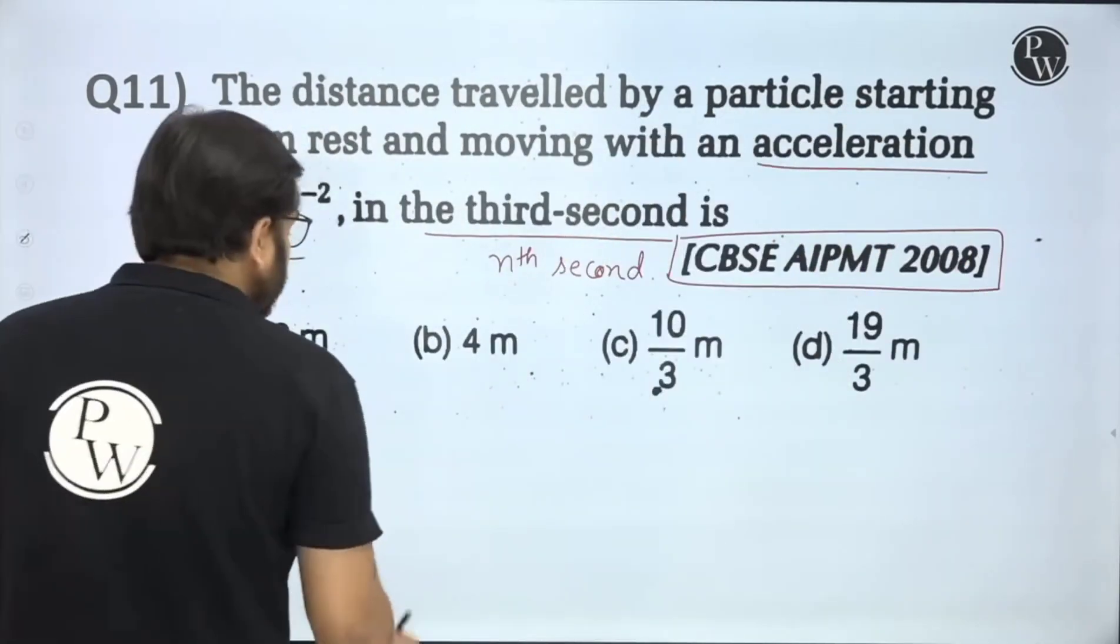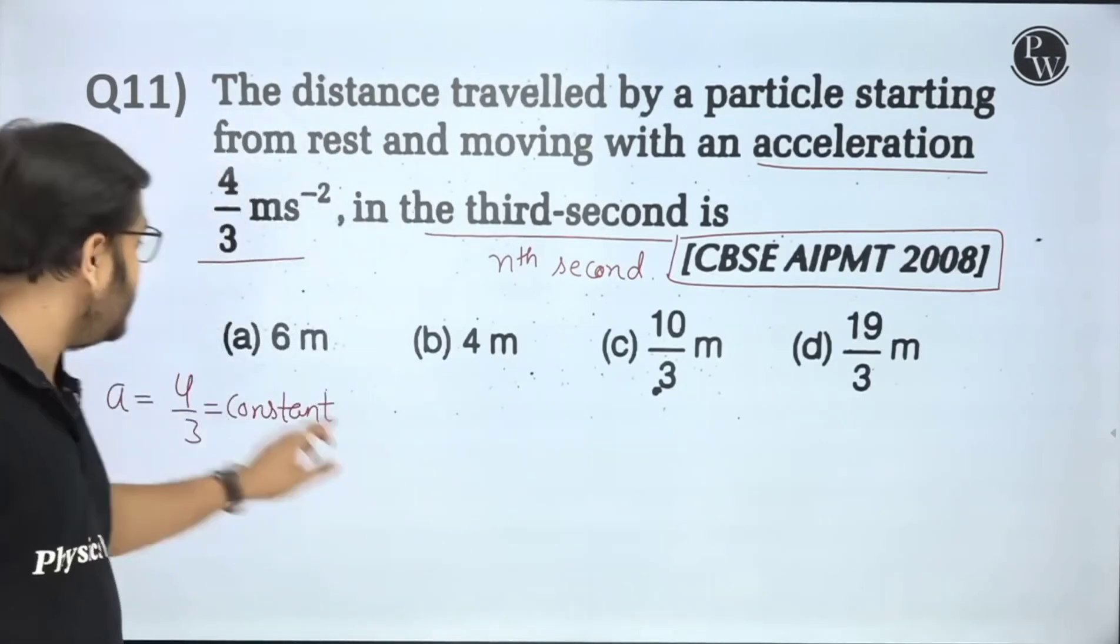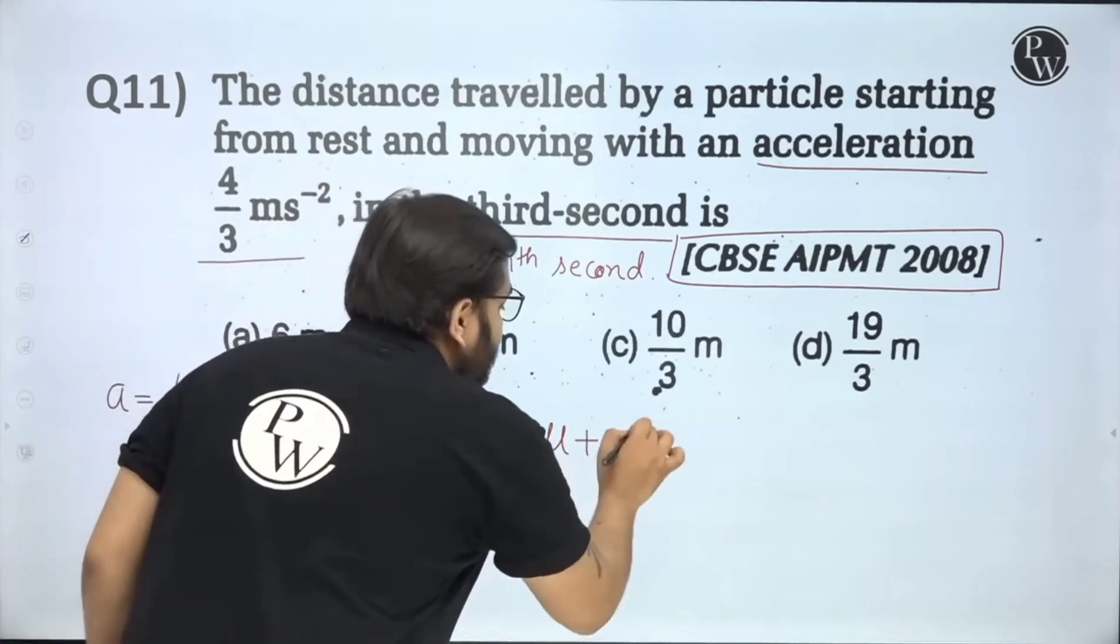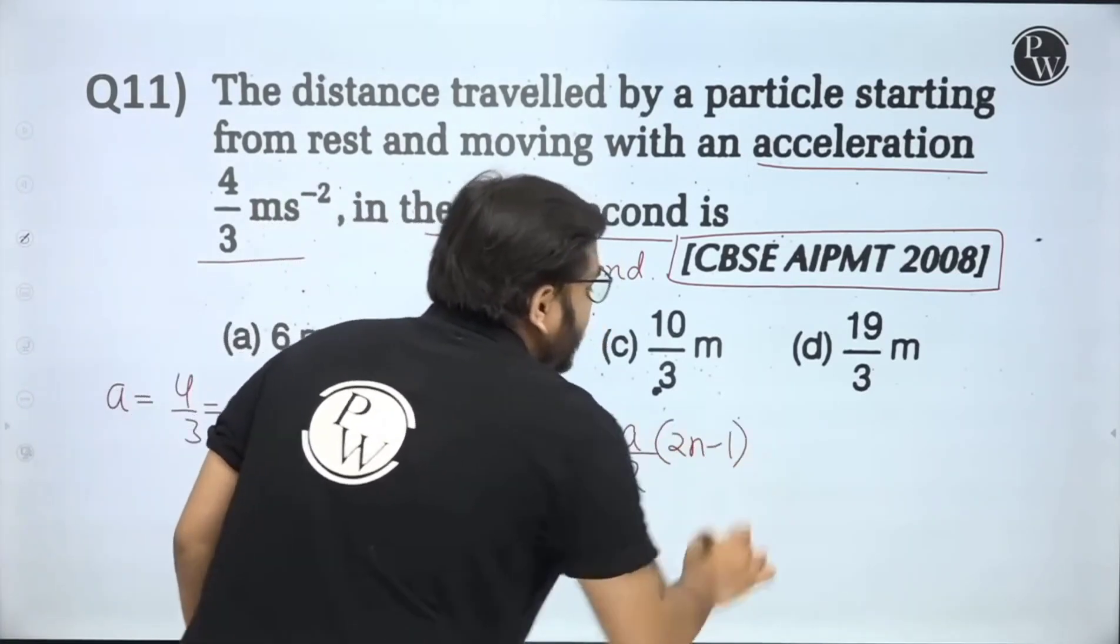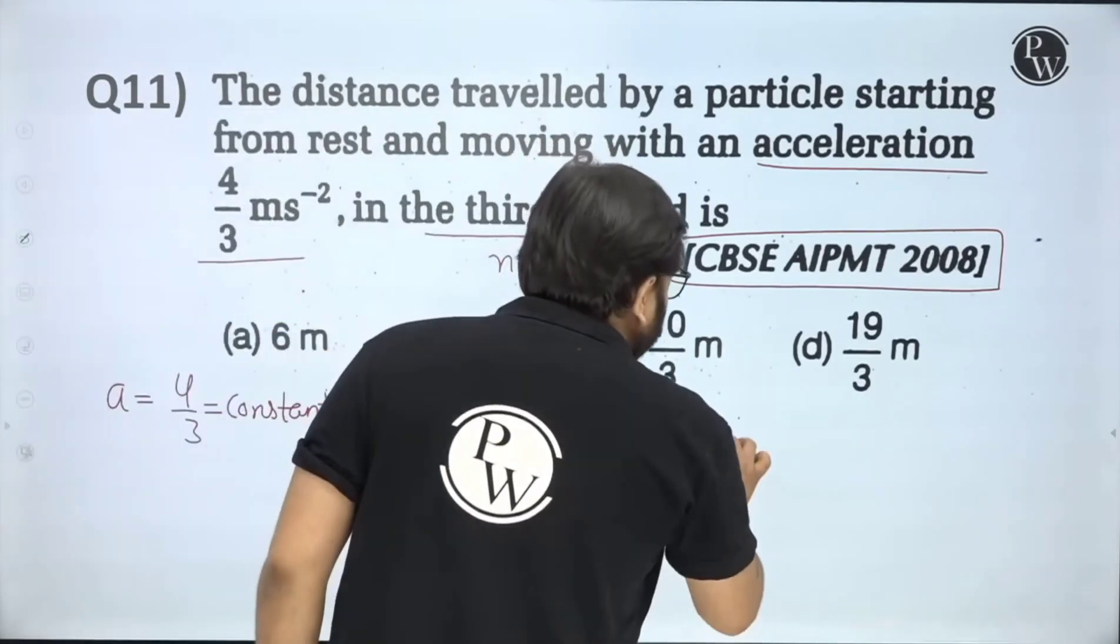Constant acceleration ka formula laasak te hai? Constant acceleration me distance covered in nth second ka formula kya hai? U plus A by 2, 2N minus 1. S N minus 1 is not going to happen, it is always valid, but it is more easy.